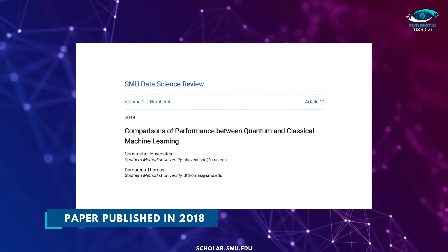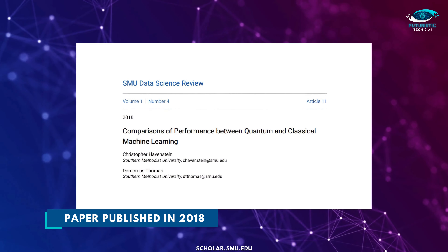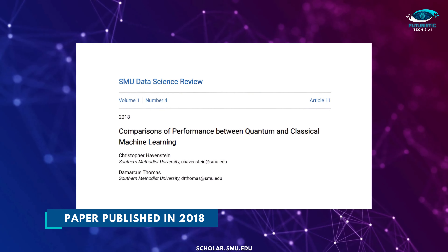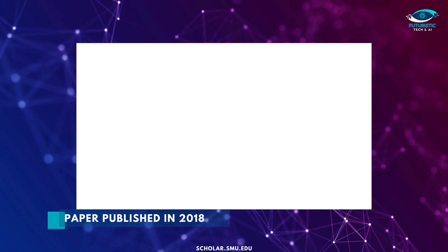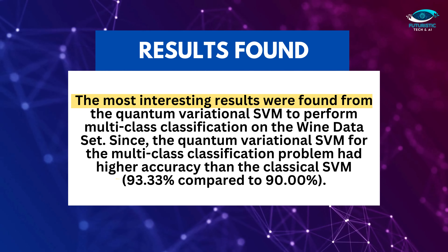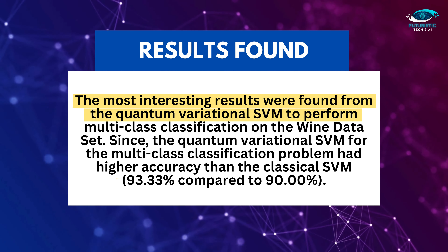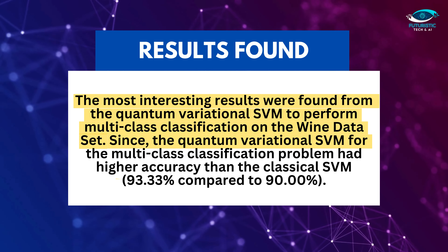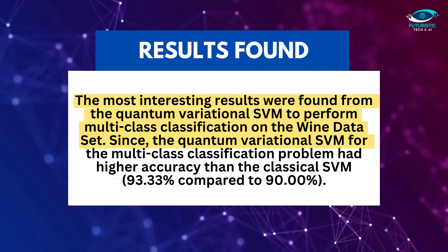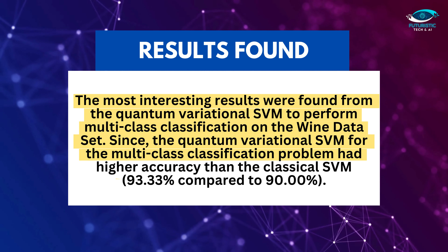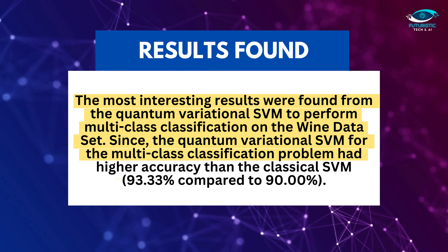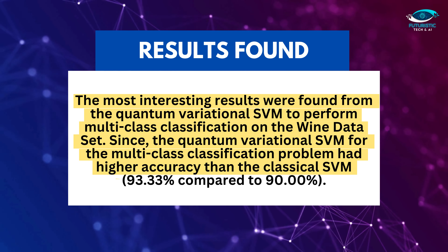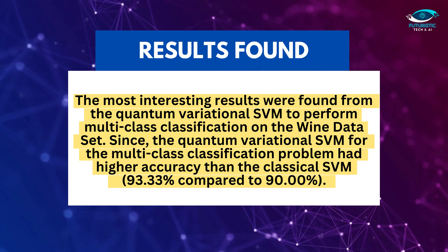A paper published in 2018 compared performance between quantum and classical machine learning. The most interesting results were found from the quantum variational SVM performing multi-class classification on the Iris dataset. The quantum variational SVM had higher accuracy than the classical SVM — 93.33% compared to 90%.